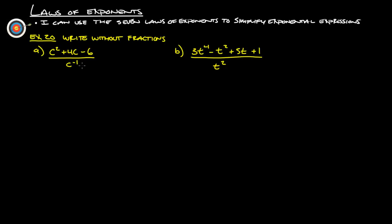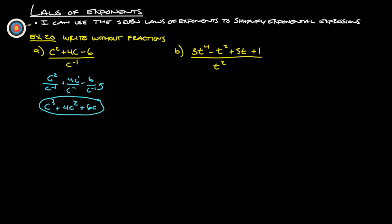Last two examples: write without fractions. We have three terms on top and one on the bottom, so we split them into three pieces: c squared over c to the negative 1st, 4c over c to the negative 1st, and negative 6 over c to the negative 1st. 2 minus negative 1 is c cubed; 1 minus negative 1 is 4c squared; and negative 6 moves up as negative 6c to the positive 1st.